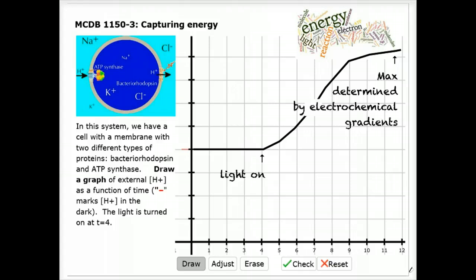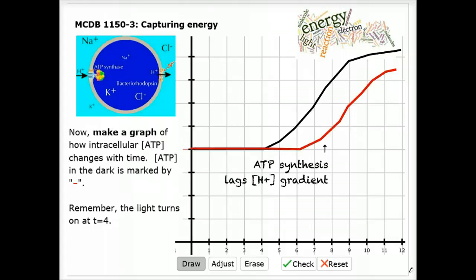As the electrochemical gradient forms, it can now start to drive the formation of ATP. If we follow the movement of ATP in the cell, we'll see that ATP synthesis lags behind the increase in the hydrogen ion gradient.